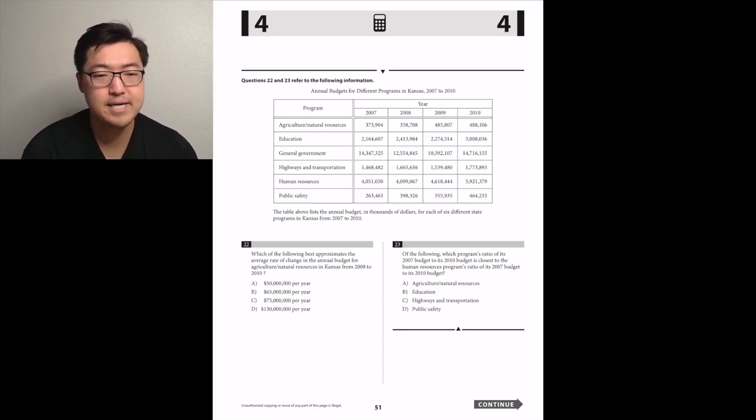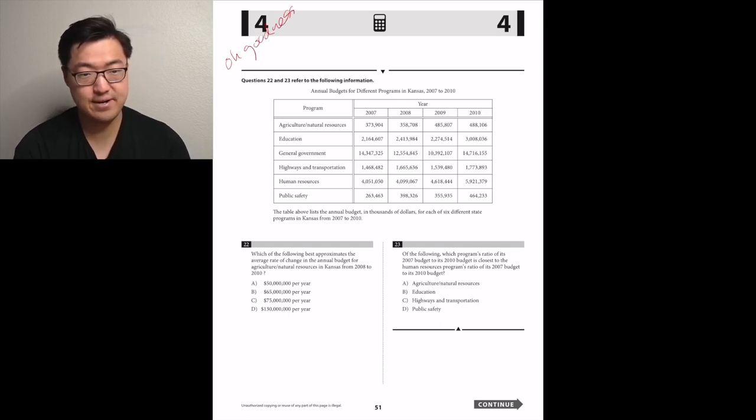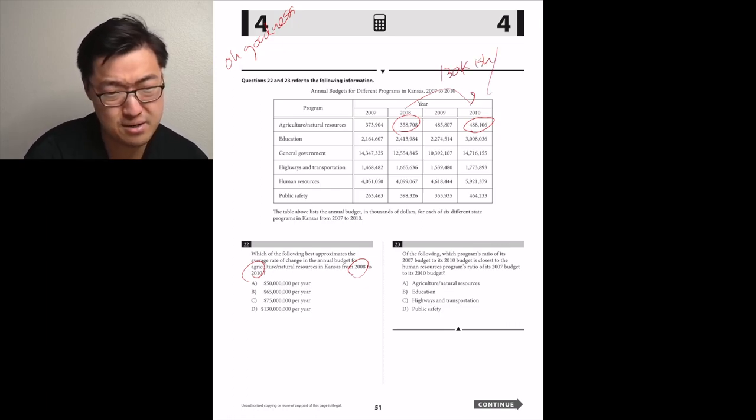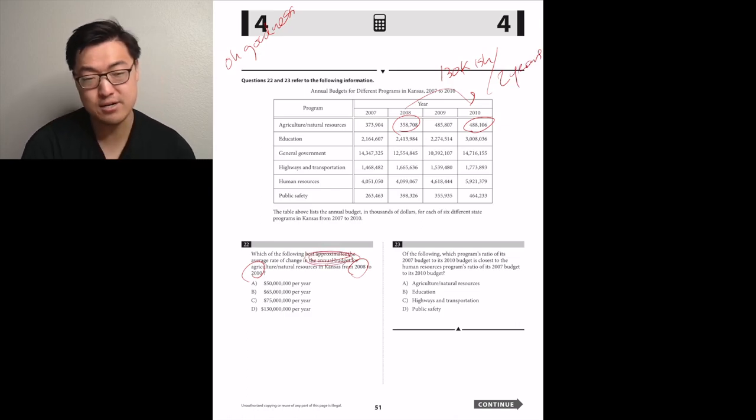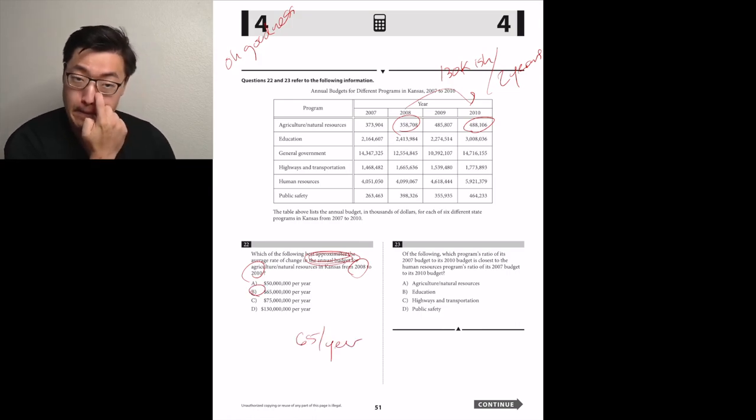Number 22, which of the following best approximates the average rate of change in the annual budget for agriculture, natural resources in Kansas from 2008 to 2010 for agriculture. So it went from like 358,000 something to 488,000. Oh, that was actually kind of nice. So it went up by like 130,000 over two years. Is it per year? The best of the average rate of change in the annual budget. Oh, so it's per year. So then we're going to do 130 divided by two, so it'd be 65,000.